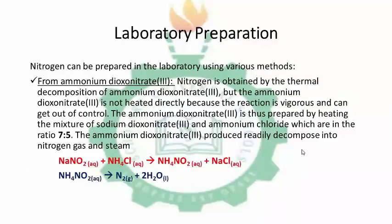Now, to the laboratory preparation of nitrogen. Nitrogen can be prepared in the laboratory using various methods. The first commonly used method is from ammonium nitrite salt. Nitrogen is obtained by the thermal decomposition of ammonium nitrite salt, but it is not heated directly because the reaction is vigorous. Instead, it is prepared by heating a mixture of sodium nitrite salt and ammonium chloride in the ratio 7 to 5.